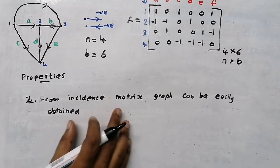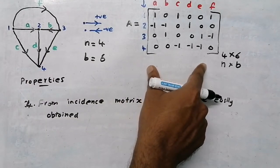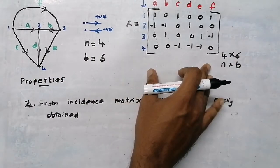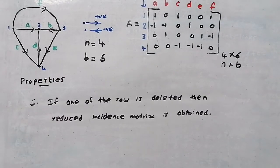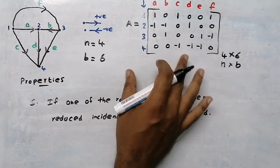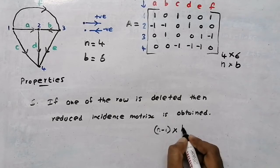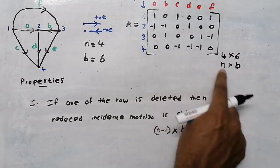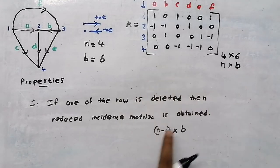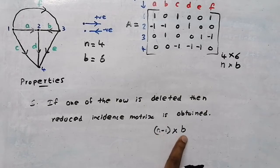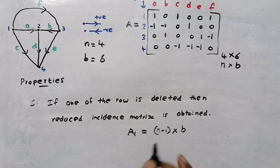Property 4: from the incidence matrix a graph can be easily obtained. Just as we found the incidence matrix from a graph, the reverse is also possible — given an incidence matrix, we can draw the graph. Property 5: if one row of the incidence matrix is deleted, we get the reduced incidence matrix with dimensions (n−1) × b, where n is the number of nodes and b is the number of branches. It is denoted by A1.